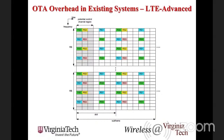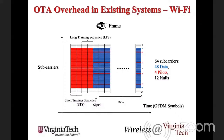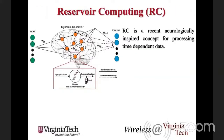For context, in LTE/LTE-Advanced the CRS pilot pattern occupies relatively few resource elements — the colored elements are training symbols and the white ones are data, representing a clear trade-off between overhead and data rate. For WiFi systems, the structure includes short training sequences (STS), long training sequences (LTS), plus pilot subcarriers: out of 64 subcarriers, 48 are data, 4 are pilots, and 12 are known symbols. In both cases, training is limited.